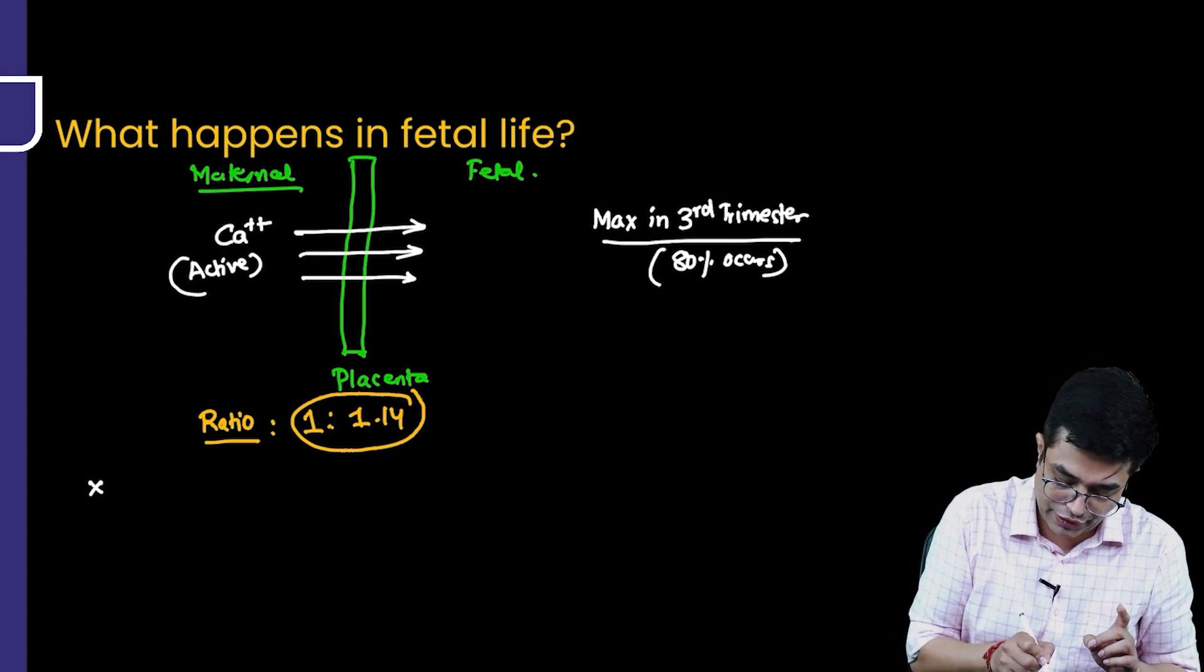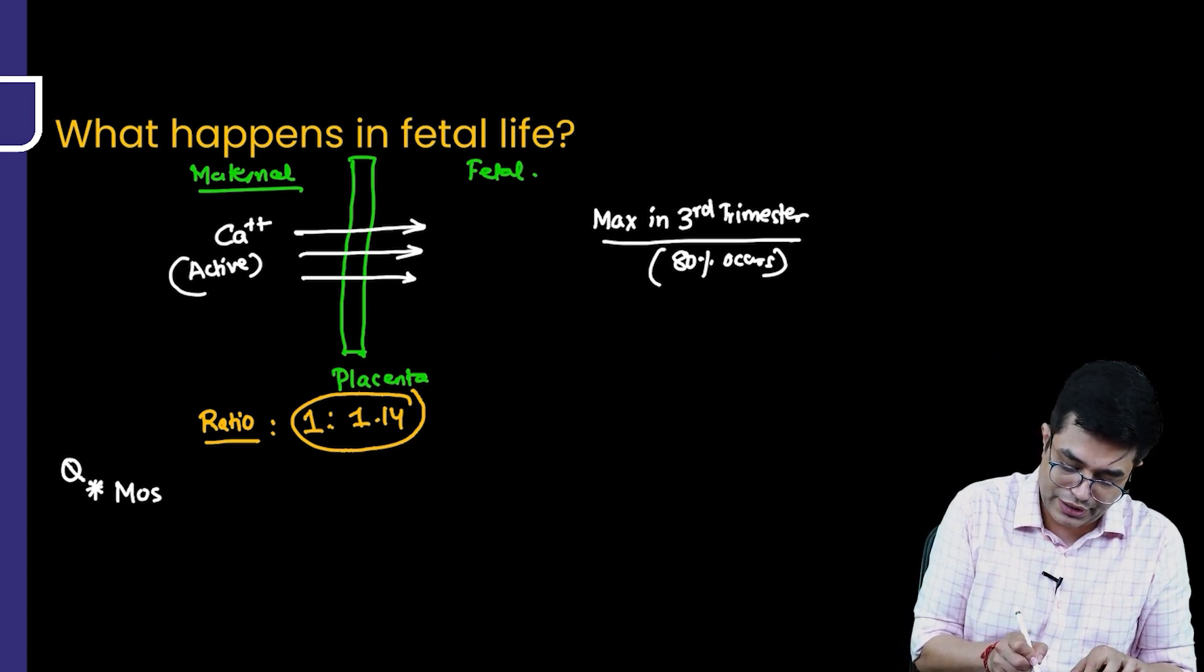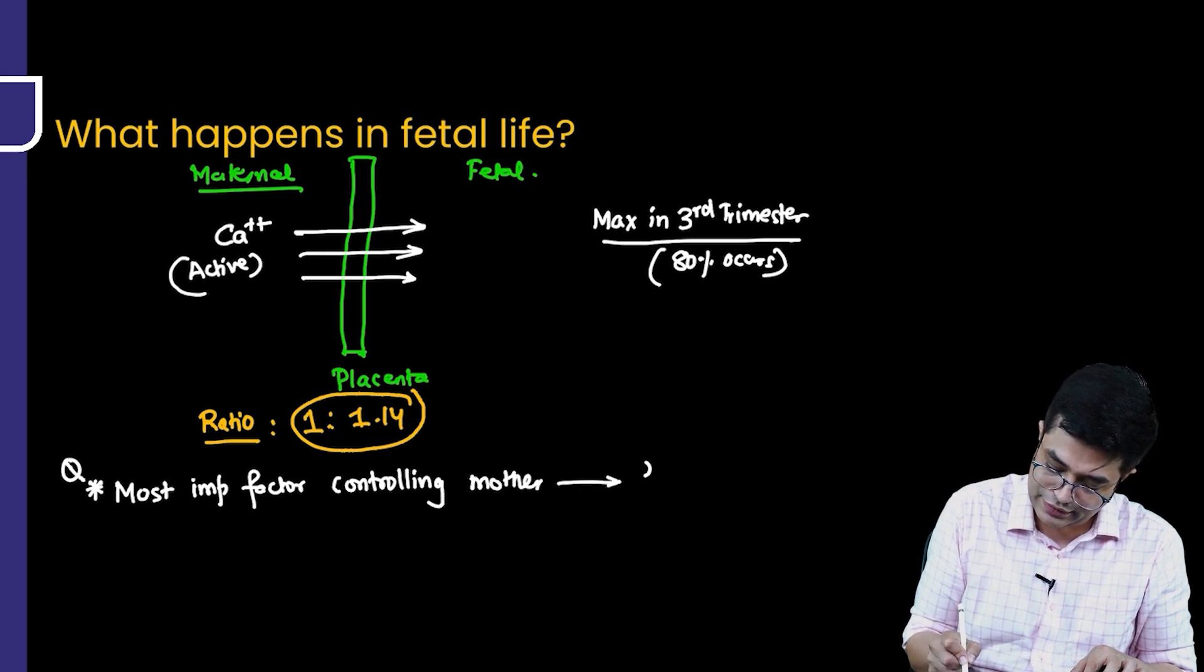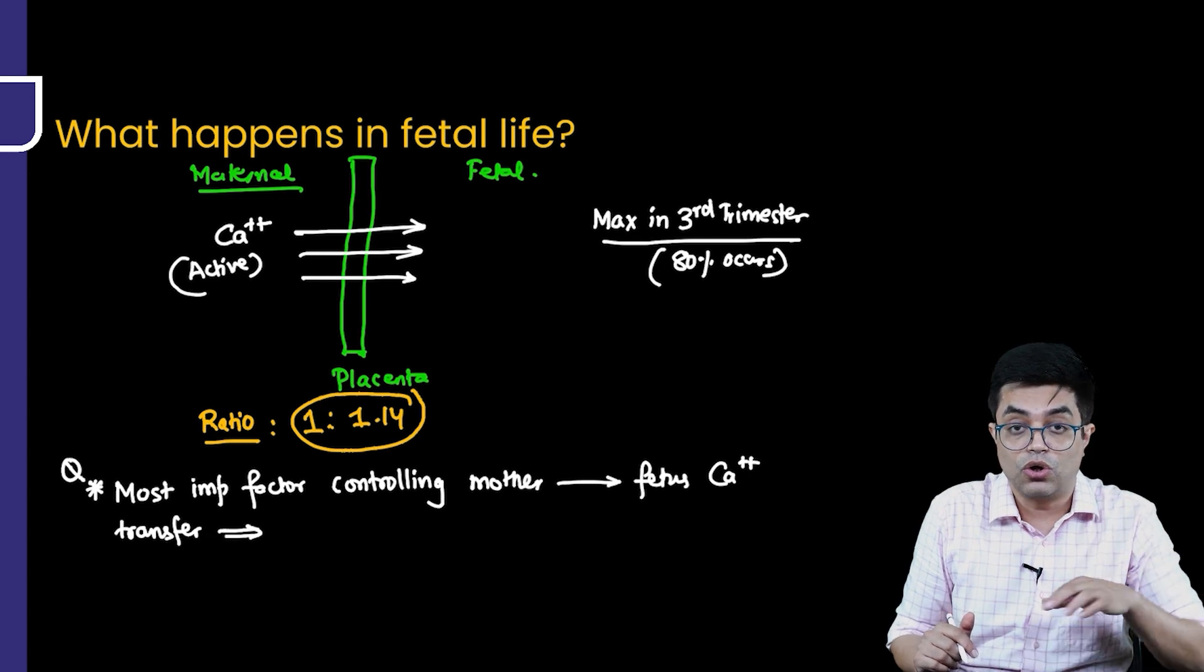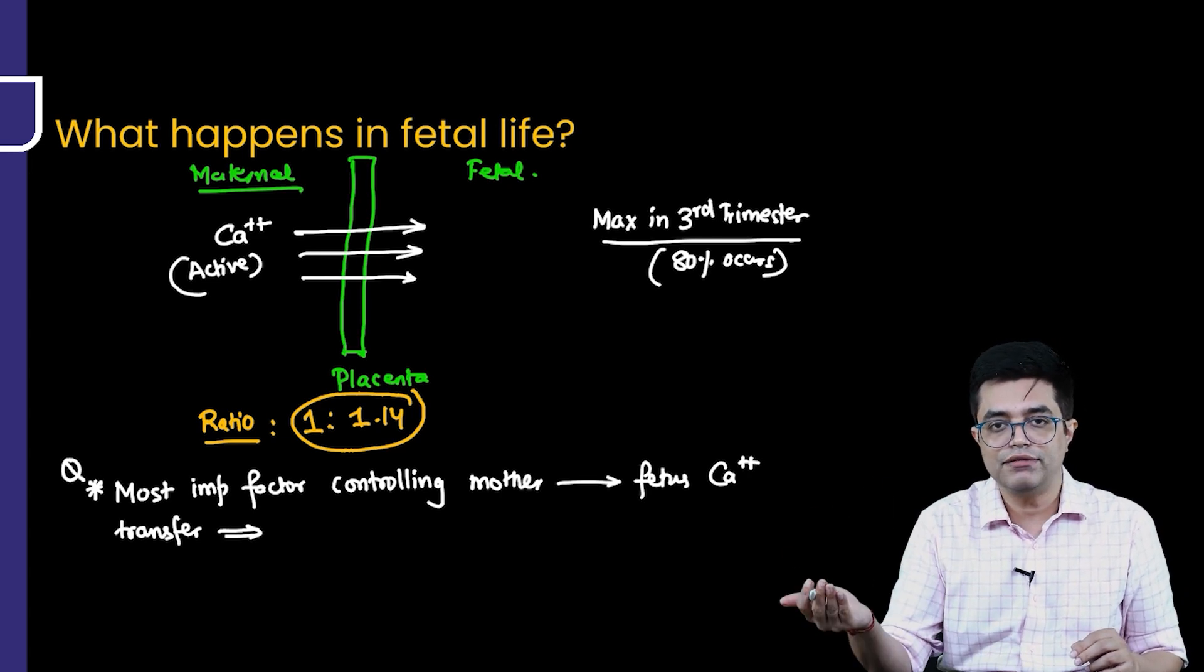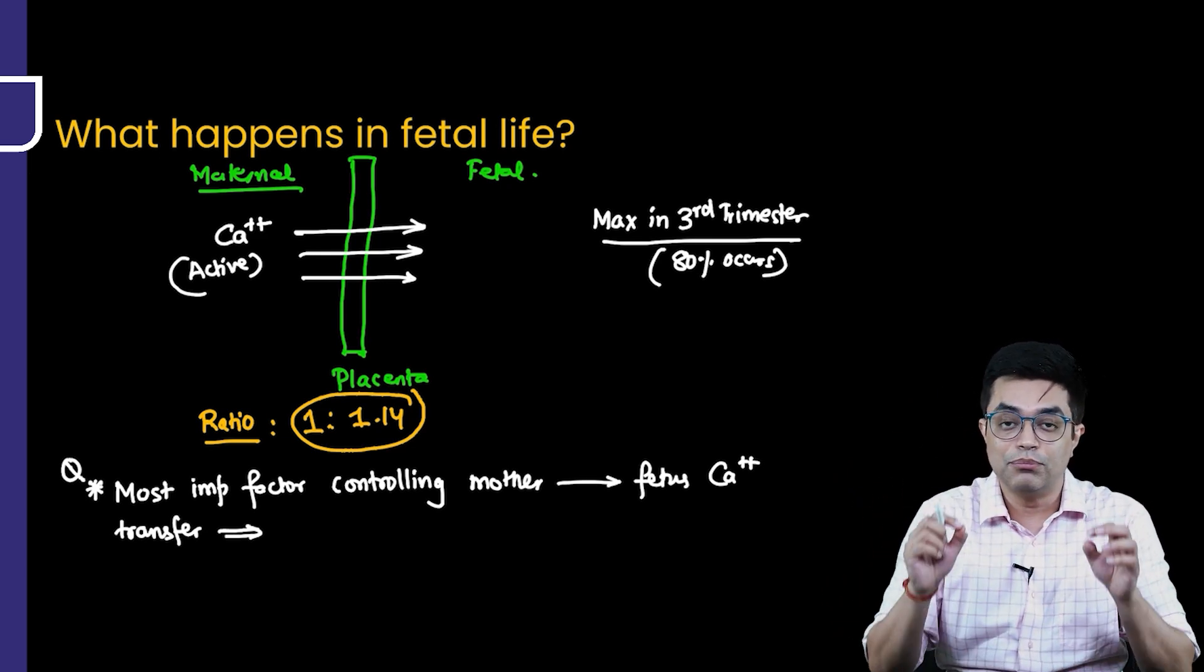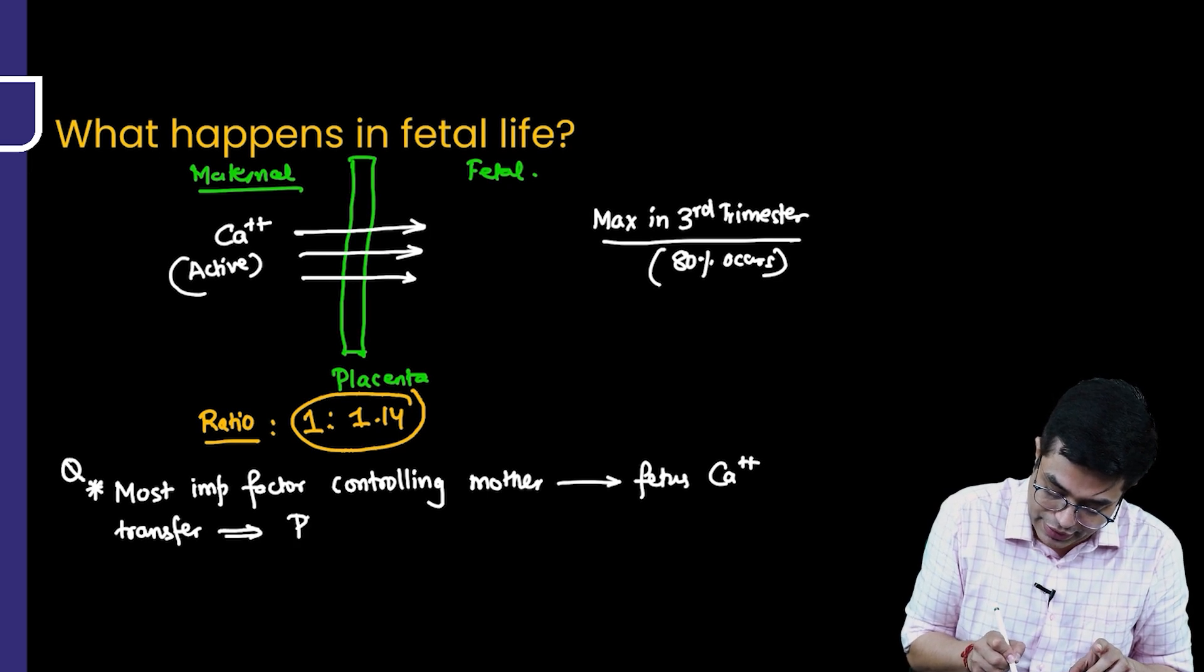And here comes your MCQ point, which is a question which has been asked in the past super speciality exam. What is the most important factor controlling mother to fetus calcium transfer? Is it vitamin D level? Absolutely not. Is it PTH levels? Not entirely true because PTH in the mother does not cross the placenta. Is it calcitonin levels? Calcitonin levels are high in the fetus, but they are from fetal own production and the mother calcitonin levels are again not crossing it. The most important factor which is controlling this transfer according to Nelson also is PTHRP.